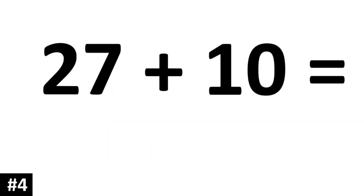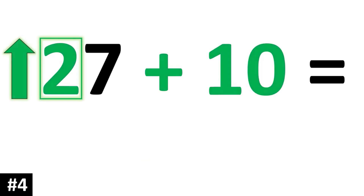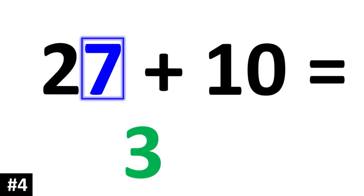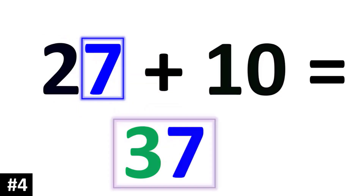27 plus 10: to add a two-digit number by 10, the tens digit of that two-digit number goes up by 1. So this 2 of 27 is going to become a 3, and the ones digit stays the same. 37.